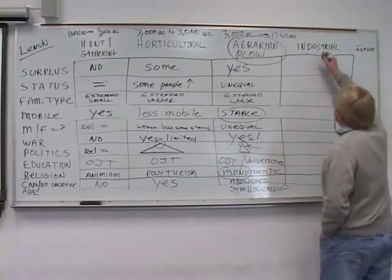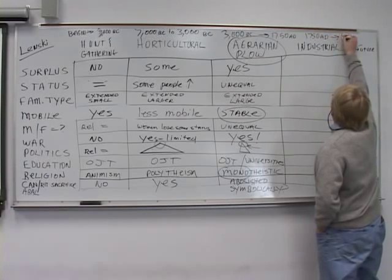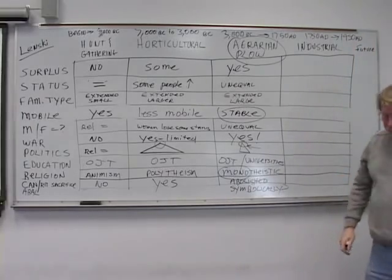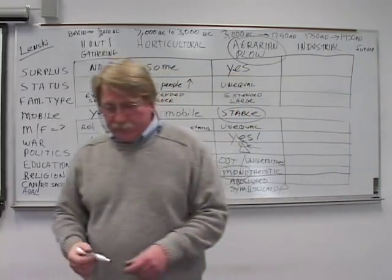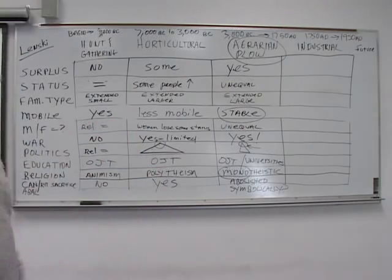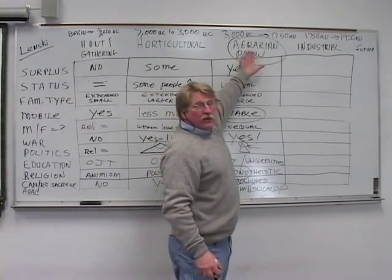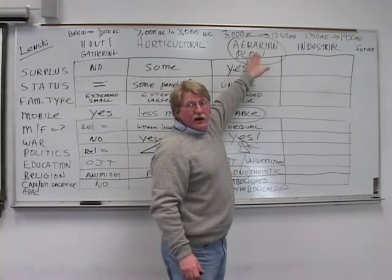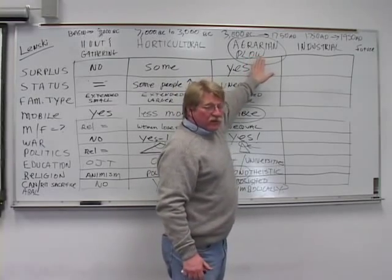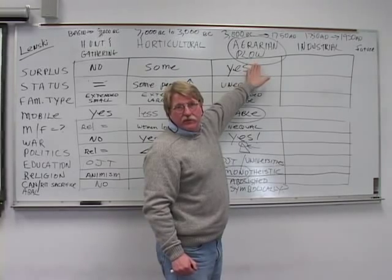Then sometime about 1750 AD, what happened in Europe, and it lasted until about 1950 AD, is the Industrial Revolution. It happened about 1850 in the United States, 1750 in Europe. And the Industrial Revolution suddenly, no longer we depended primarily upon the agrarian society, although we obviously have to have food produced. And the farmers got so efficient that we're down to one to two percent of Americans are farmers that feed the rest of us.